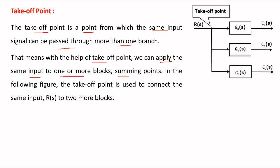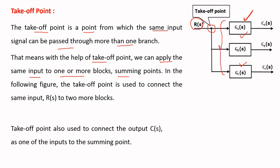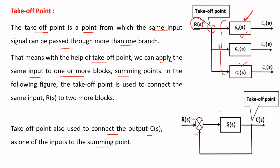For example, consider this block diagram. Here the takeoff point receives input R(s) and applies the same input to three blocks — G_a(s), G_b(s), and G_c(s). The takeoff point is also used to connect the output C(s) as one of the inputs to the summing point. From this takeoff point, the output is applied to the summing point as one of its inputs. That is the other use of a takeoff point.